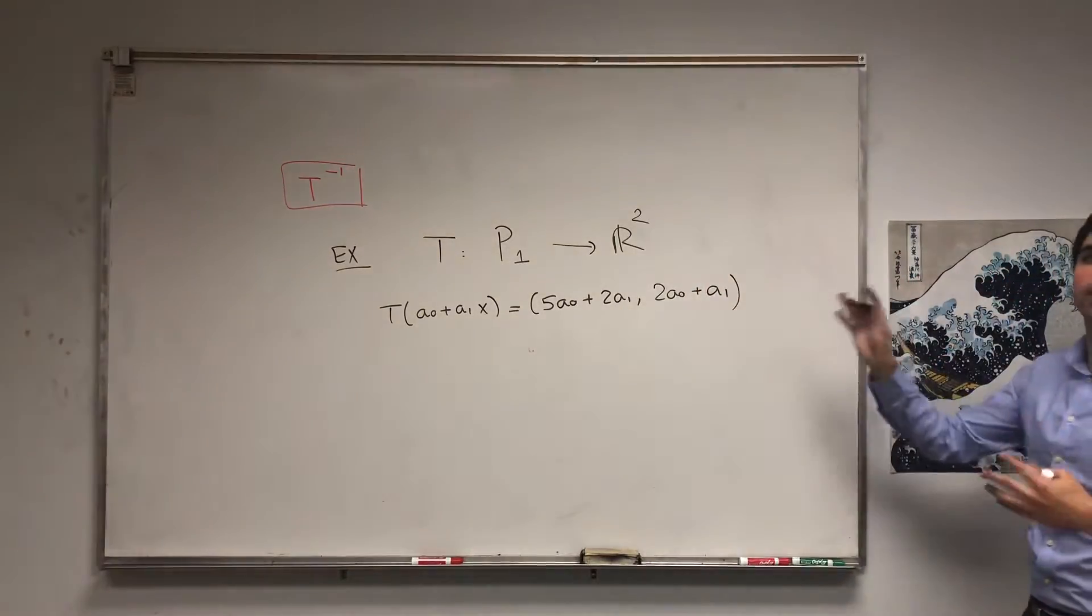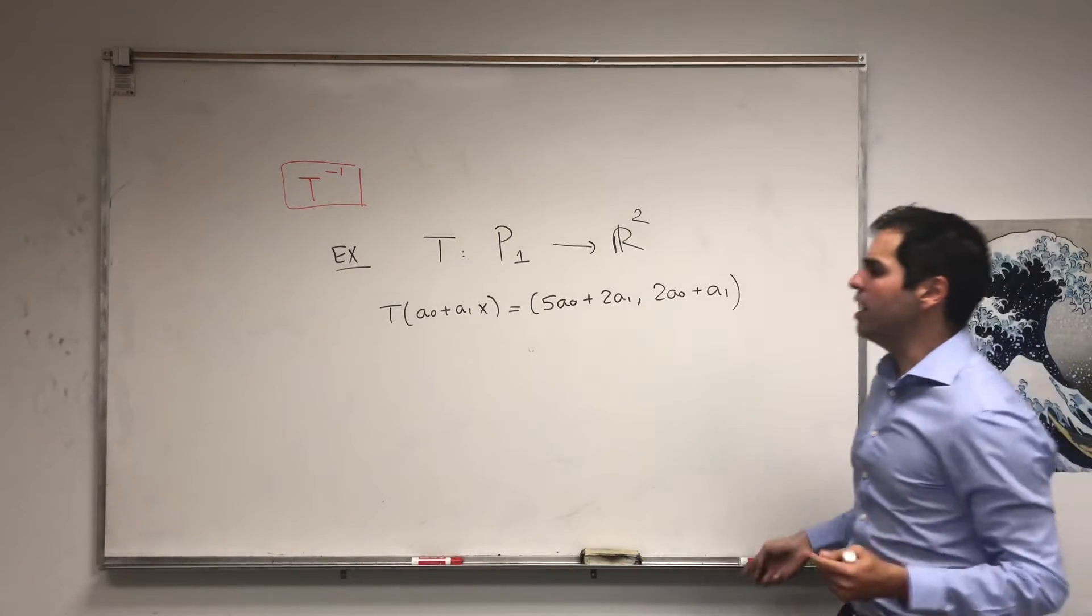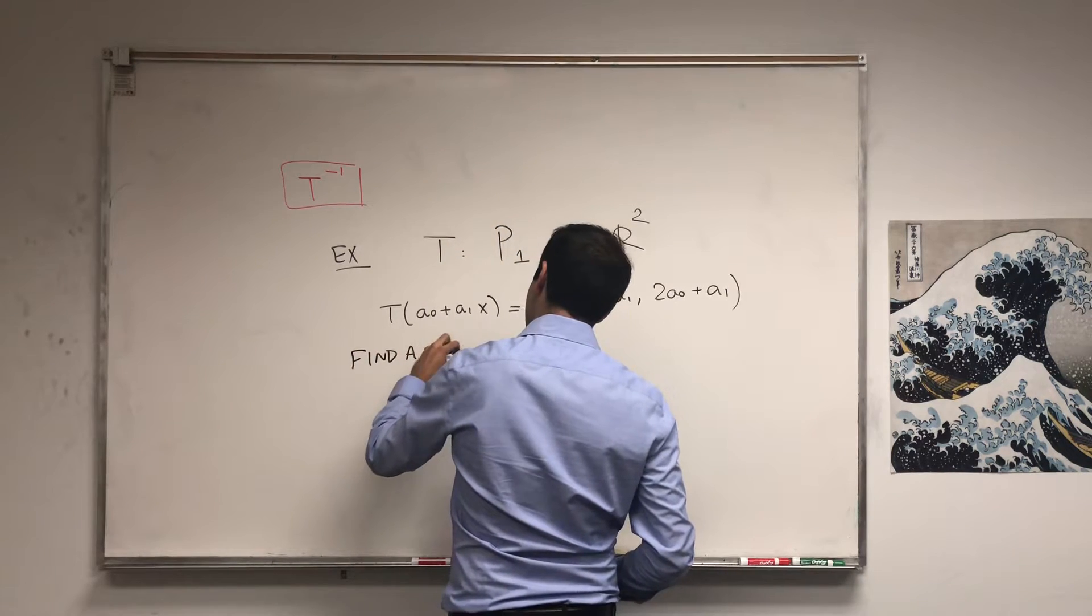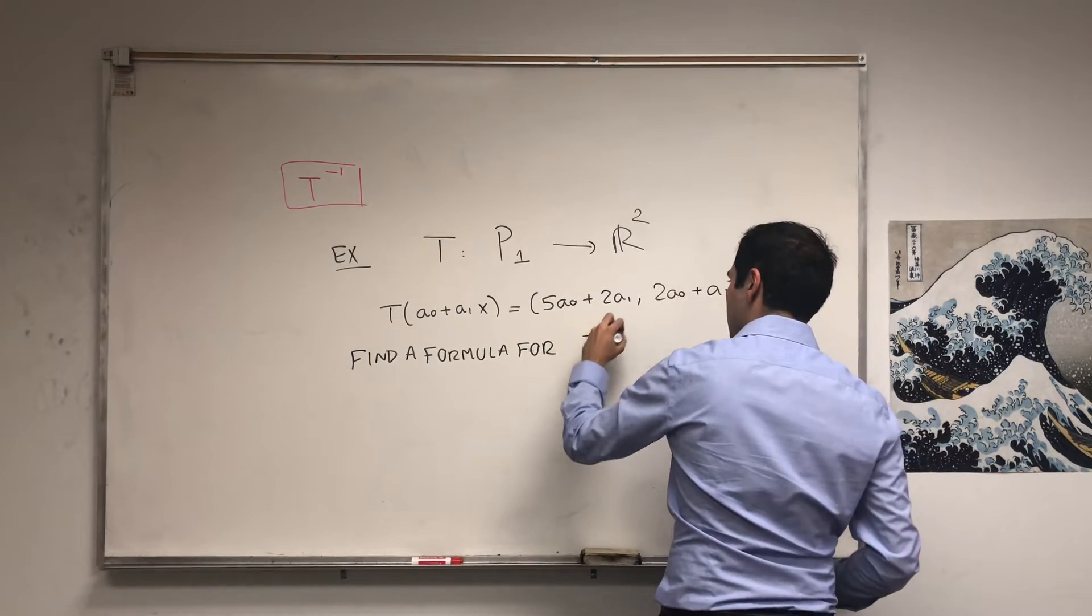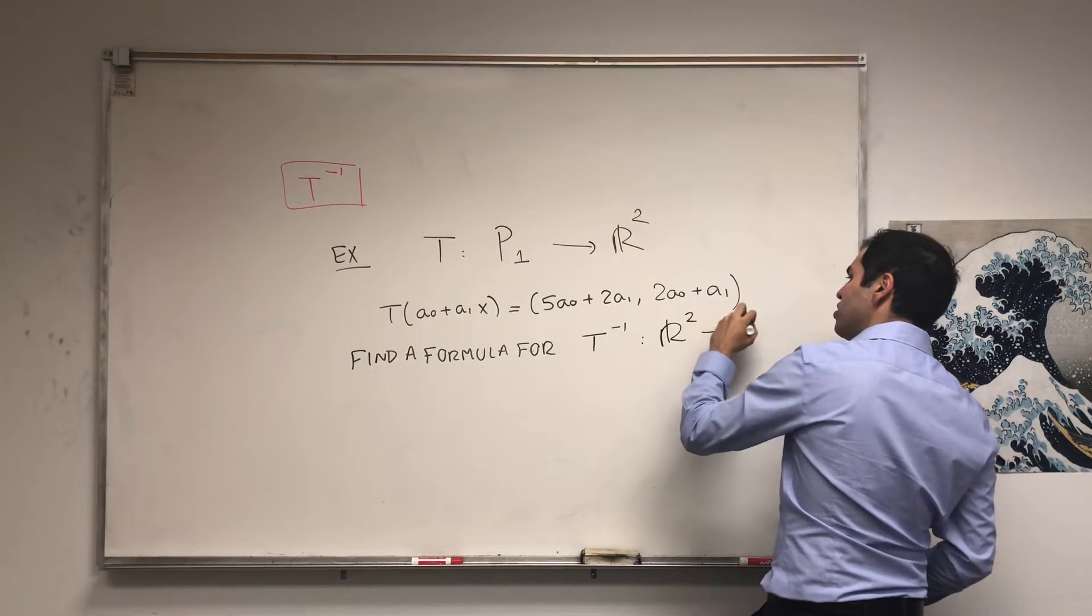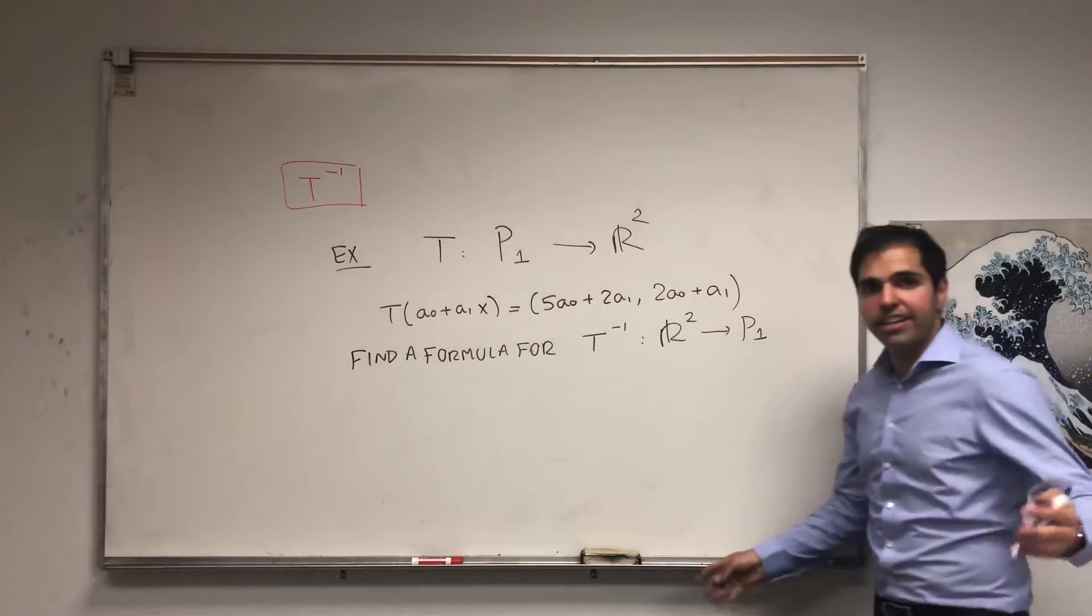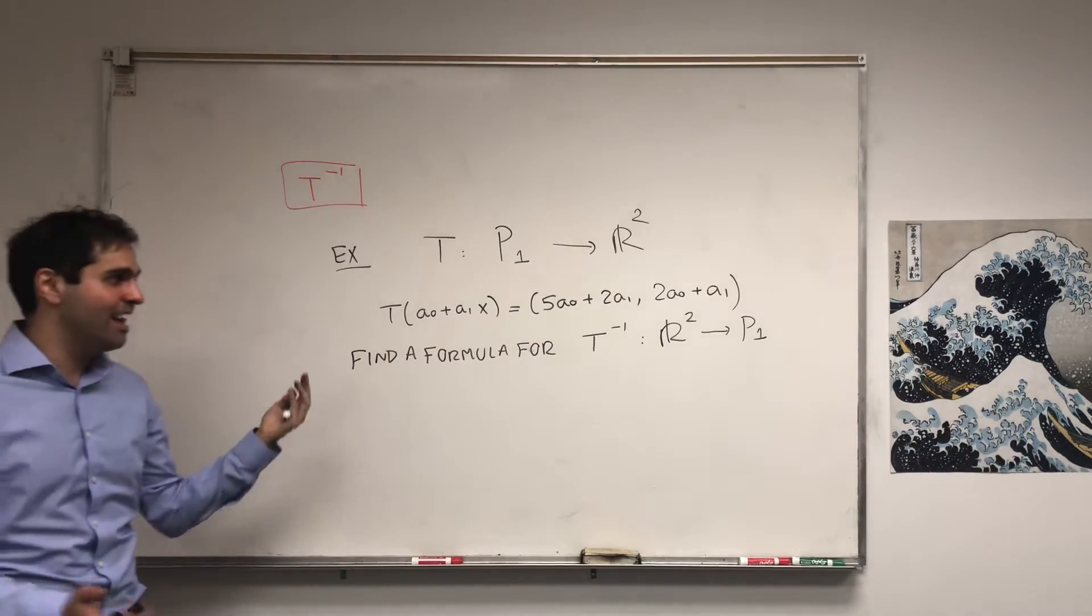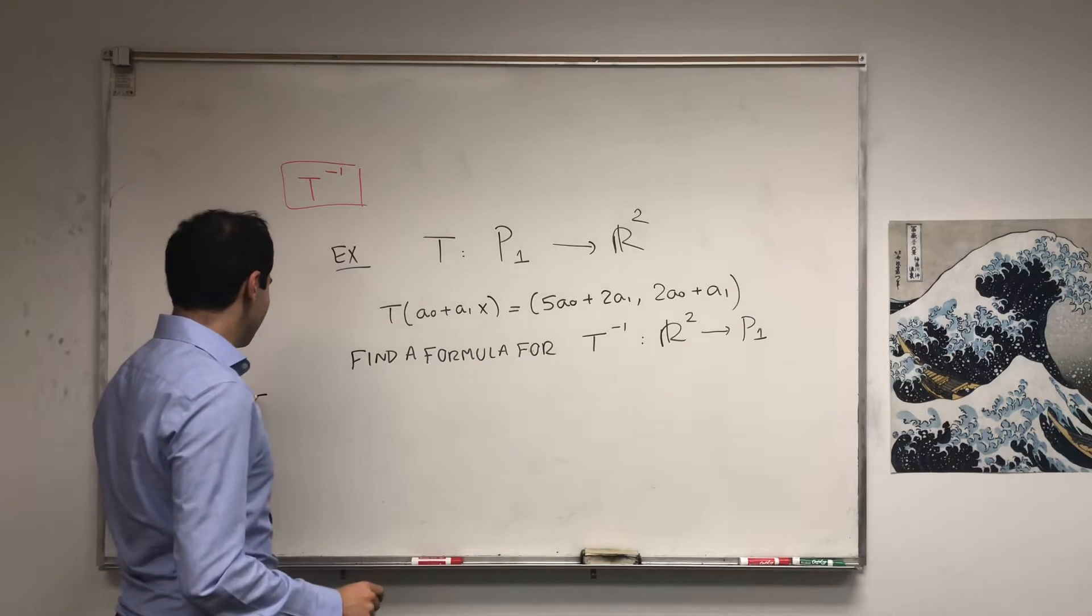And the goal is, so you can show that T is invertible, and in fact, we'll find a formula for it. The goal is find a formula for T inverse. And remember, T inverse, in this case, goes from R2 to P1. Now, you could do it algebraically, using the definition of T inverse, but this is a big pain. Instead, let's use awesome linear algebra to do this.